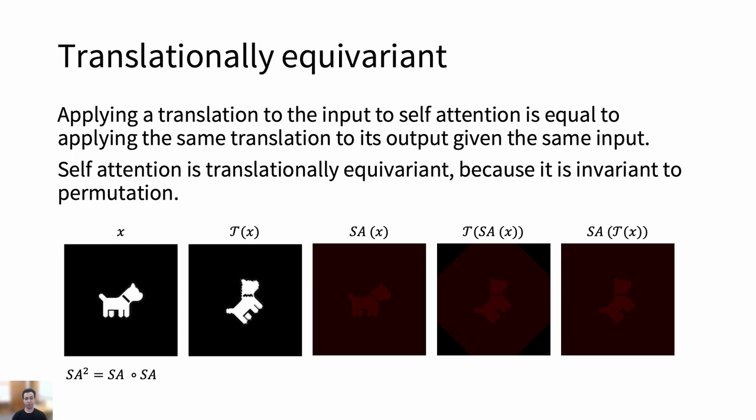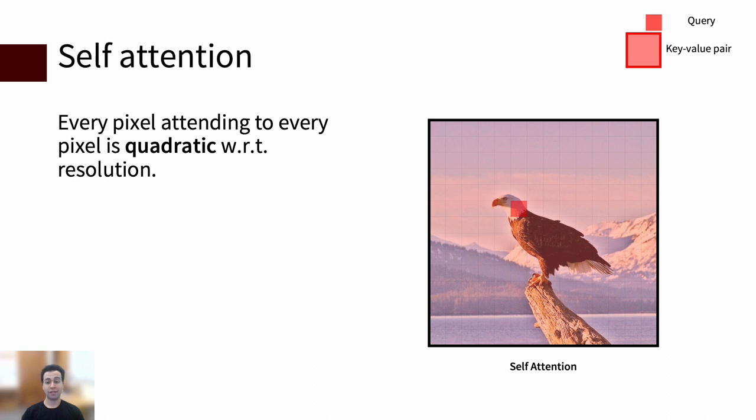Self-attention is also equivariant to translations, a property we're used to seeing in CNNs. It's no surprise that some of these properties come at a cost, a quadratic time complexity with respect to input size. This is why, in vision specifically, we're interested in avoiding this in order to scale to larger image resolutions.